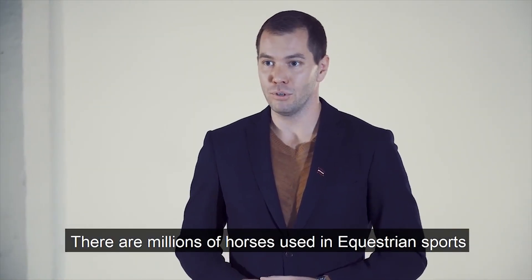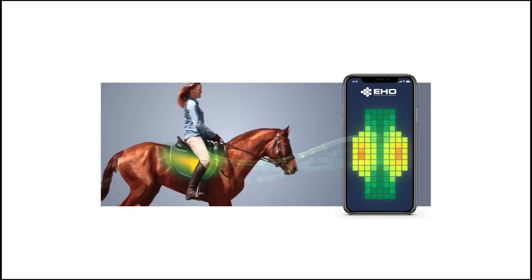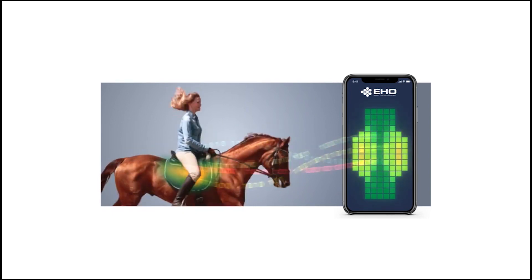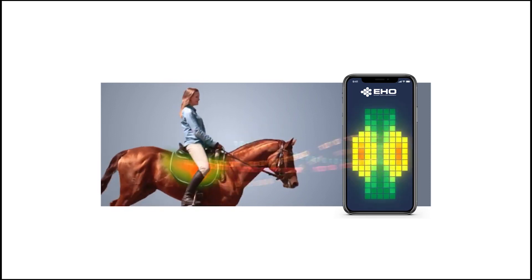Although there are other systems on the market that use somewhat similar ideas, they are much more expensive and have limited functionality, only being used for saddle fitting rather than measuring performance in action. The EHO smart saddle would thus be an industry first when it comes to data collection of pressure metrics while riding.